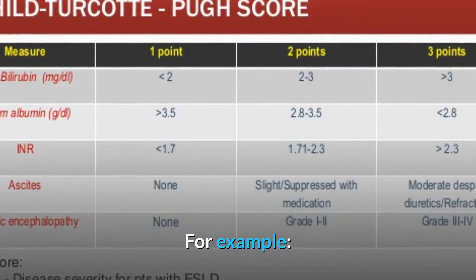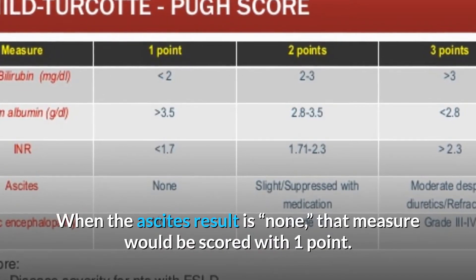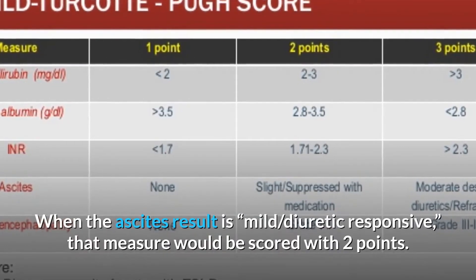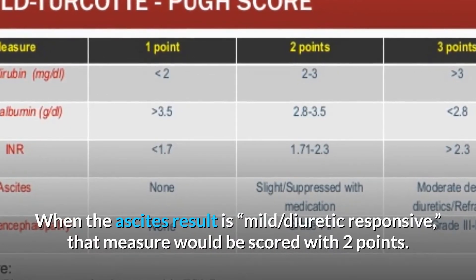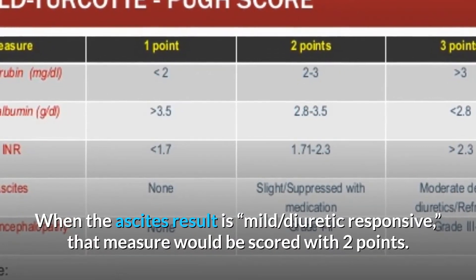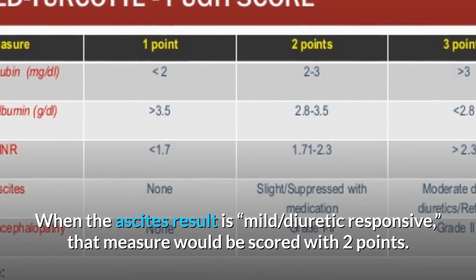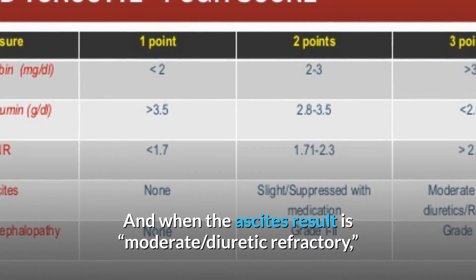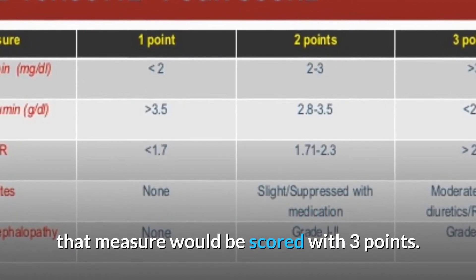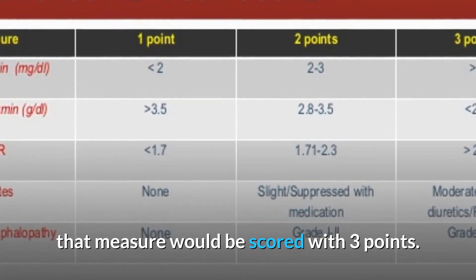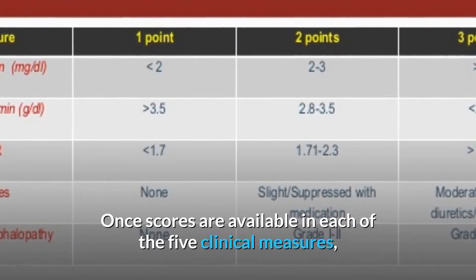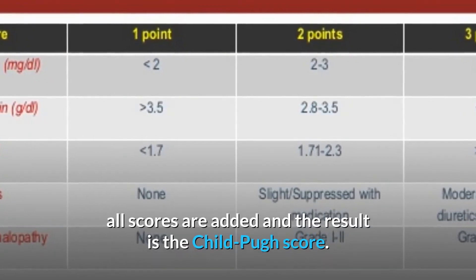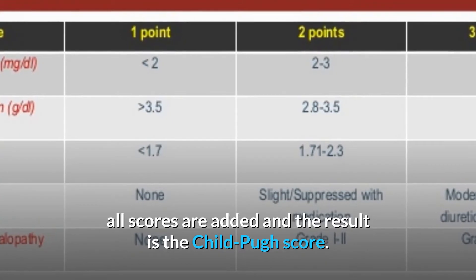The fifth measure is hepatic encephalopathy, a brain disorder from liver disease. For example, when the ascites result is none, that measure is scored one point. When mild and diuretic responsive, it is scored two points. When moderate and diuretic refractory, it is scored three points. All five scores are added together to produce the Child-Pugh score.